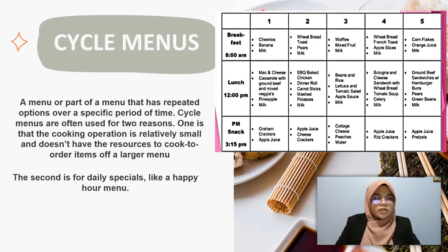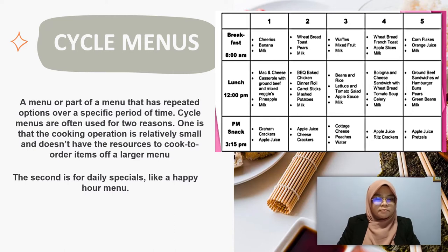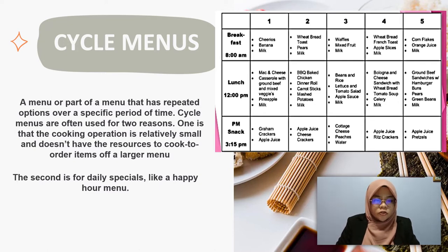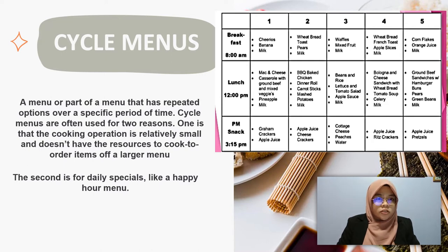Number four is the cycle menu. Simply put, a cycle menu is a part of a menu that has repeated options over a specific period of time. For example, think of a sandwich shop that offers a certain sandwich on Monday, then another sandwich on Tuesday and so on for the rest of the week. If they stick to those sandwiches and repeat them week after week, it's called a cycle menu. Cycle menus are often used for two reasons: one, the cooking operation is relatively small and doesn't have the resources for a larger menu; and two, for daily specials like a happy hour menu.